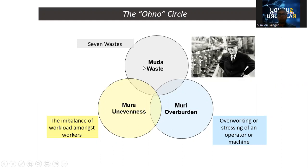We have to go through our observations and think: is this observation Muda — is it waste? If so, we put the letter W in front of that observation, then think about which type of waste it belongs to. The eight types of waste are: Transport, Inventory, Motion, Waiting, Overproduction, Over-processing, Defects, and Skills.